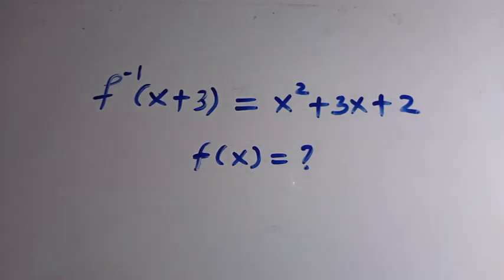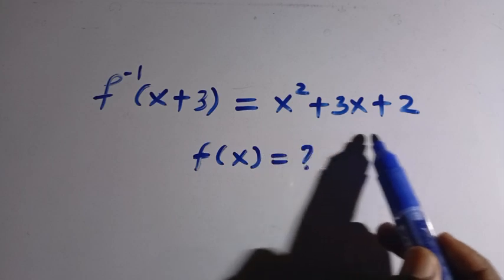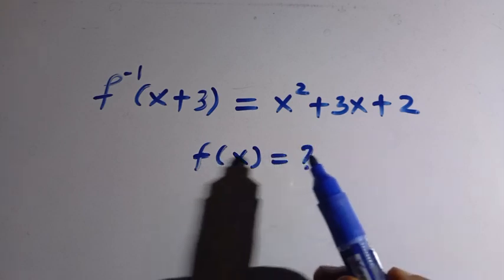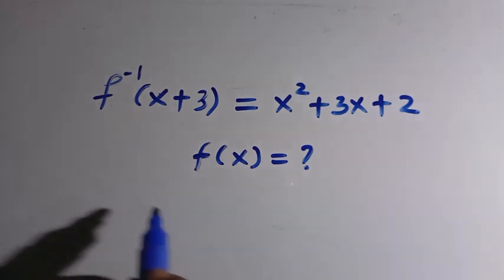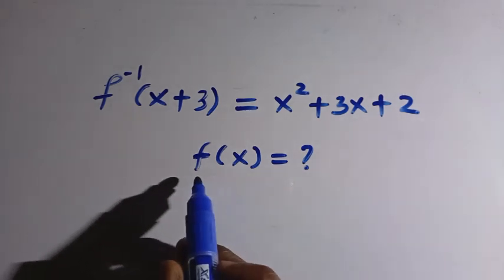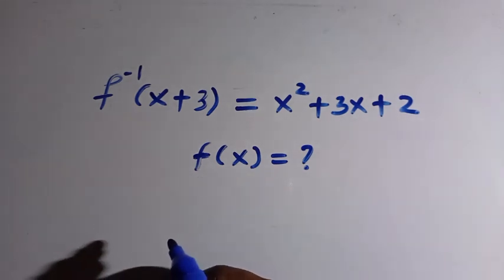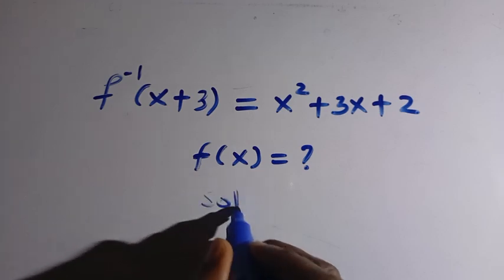There are three things we need to do here. First, we have to take the right-hand side, which is in the form of a quadratic equation, and write it in the form of factors having x plus 3 as one of the factors. After that, we are going to change this inverse to the ordinary form, f of x.